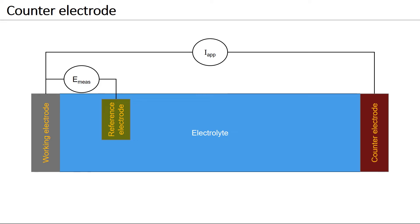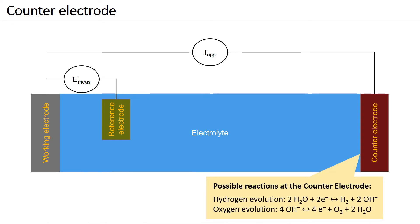We can think of a counter-electrode as a source or a sink of electrons for the reactions occurring at the working electrode surface. To achieve this, the counter-electrode must allow for electrochemical reactions to occur on its surface. Examples for such reactions are the hydrogen evolution or oxygen evolution reaction.